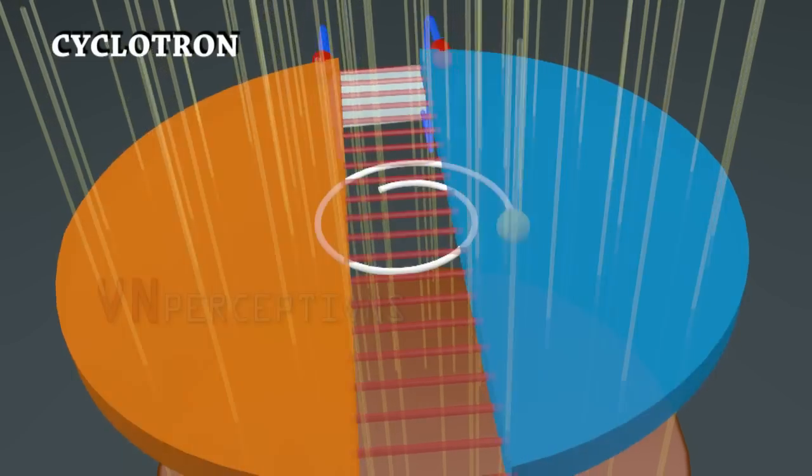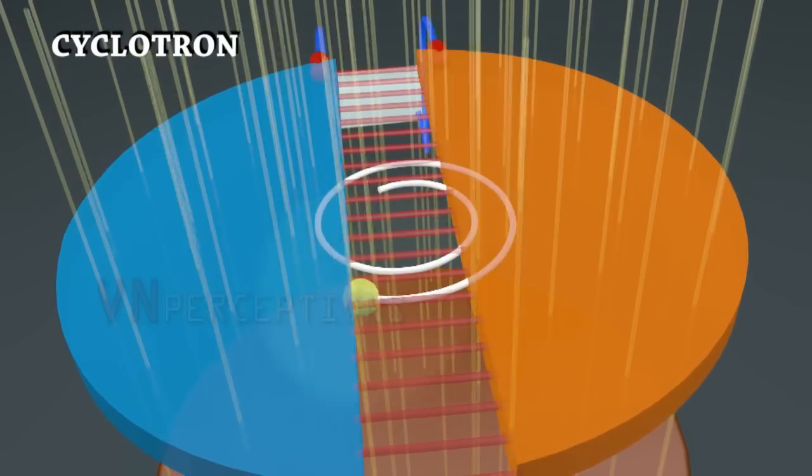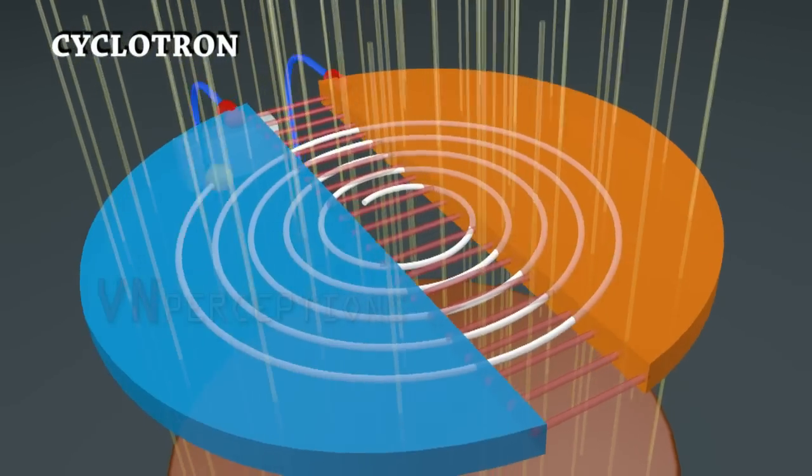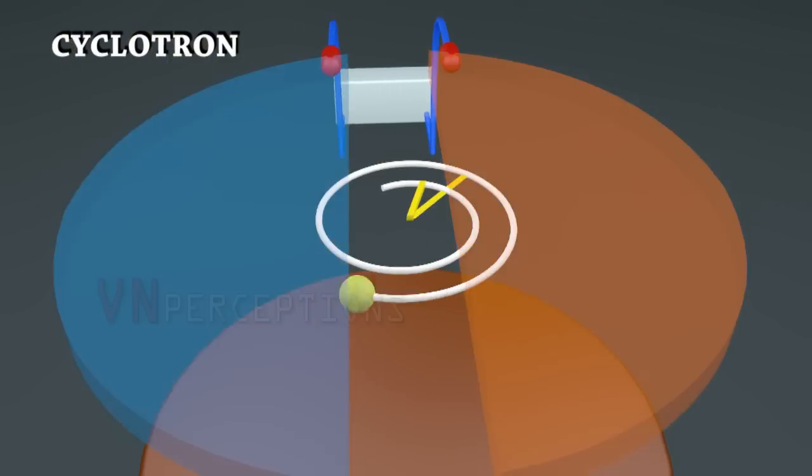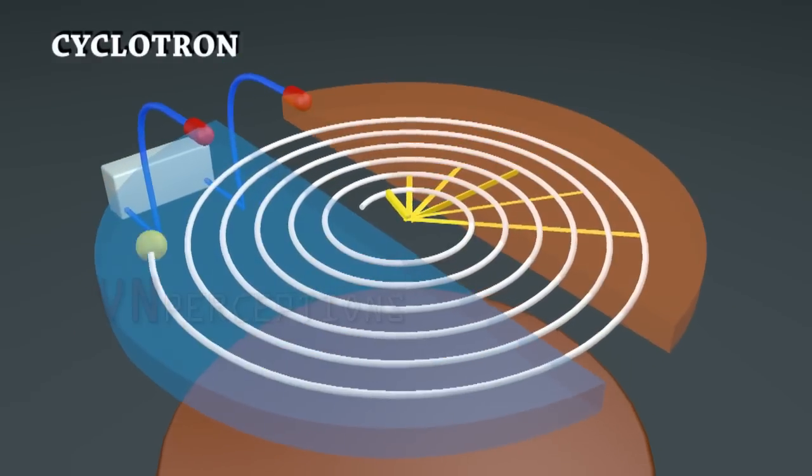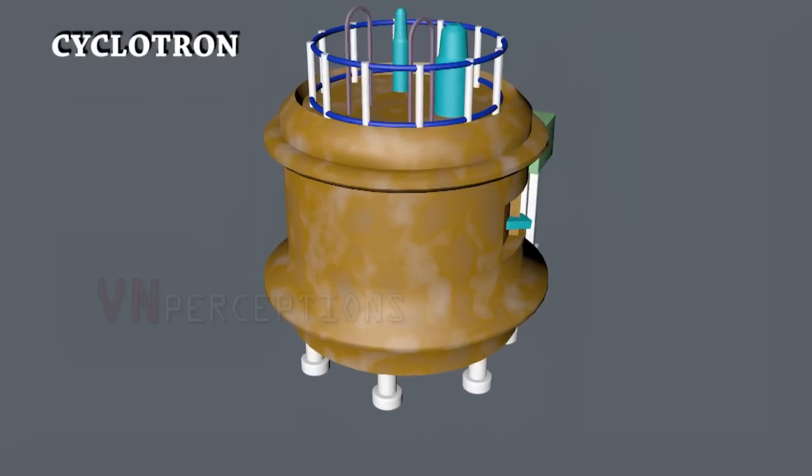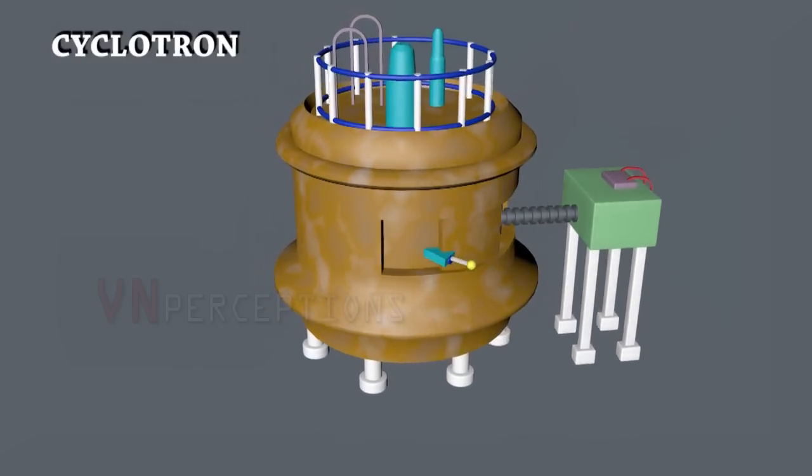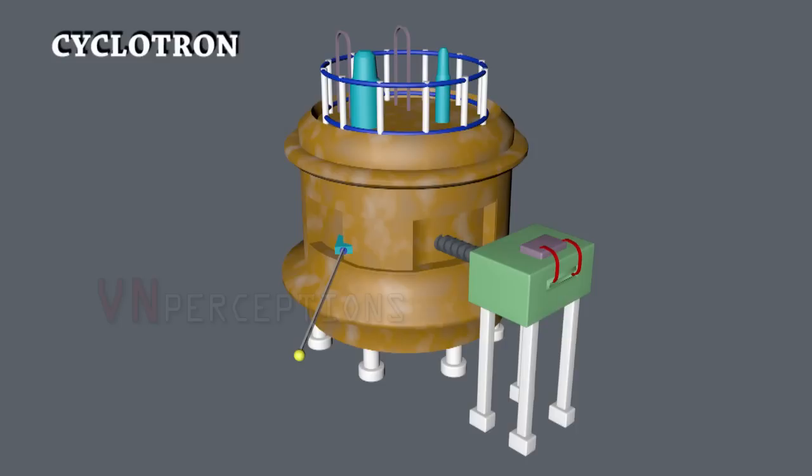In this way the particle moves in a circular path and with each circle the velocity of the charged particle increases. If the velocity of a charged particle increases, the radius of the charged particle would also increase. Finally when the particle has no more space to grow in radius, it is thrown out through a window. With such a high velocity the particle has high energy and it hits the target.